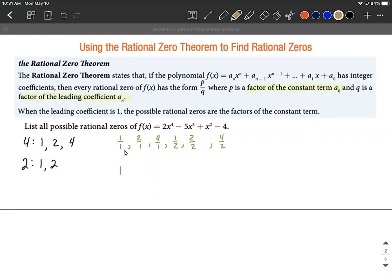1/1 is 1, 2/1 is 2, and 4/1 is 4. 1/2 doesn't reduce, so we'll leave it as 1/2. But 2/2 equals 1—we already have that, so we won't list it again. Similarly, 4/2 reduces to 2, which is already in our list, so we won't list it a second time.